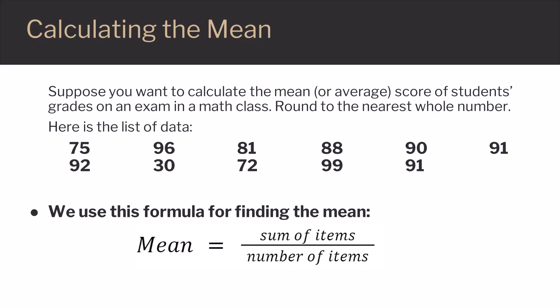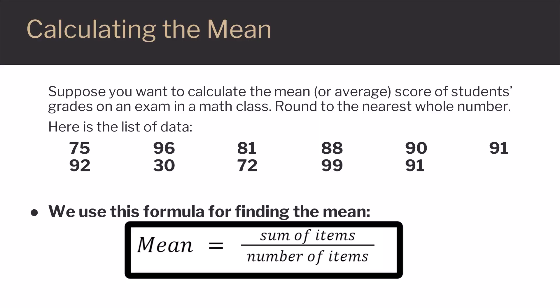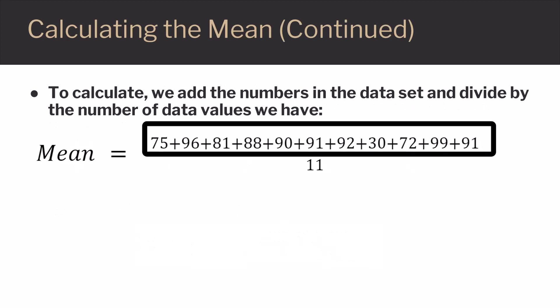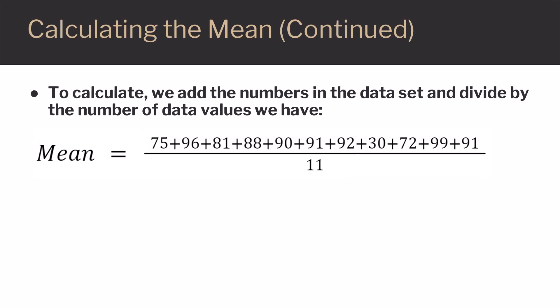To find the mean, we're going to use this formula, where we take the sum of all the items and divide by the number of items. The sum just means to add them up. So we're going to add up all the items, divided by however many we have on the list.